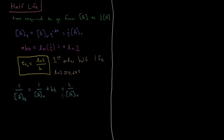We have 1 over A₀ on the right-hand side, so we subtract 1 over A₀ from both sides. The 2 over A₀ becomes 1 over A₀, and the 1 over A₀ term on the right disappears. Dividing by K, our half-life for second-order reactions is T-half equals 1 over K times the initial concentration.